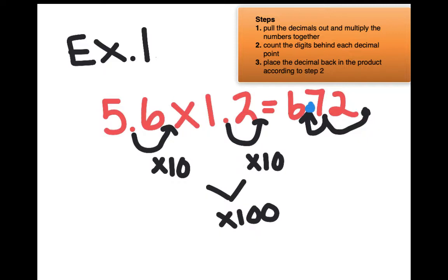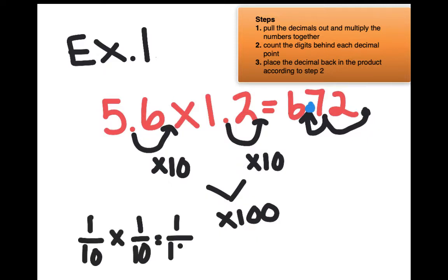Now think about this another way for a minute. You're taking a tenth in this number and you're multiplying it by a tenth in this number, correct? What is 1 tenth times 1 tenth? 1 hundredth, right? So that means my decimal point should give me out to the hundredths place. That's another way you can think about it.